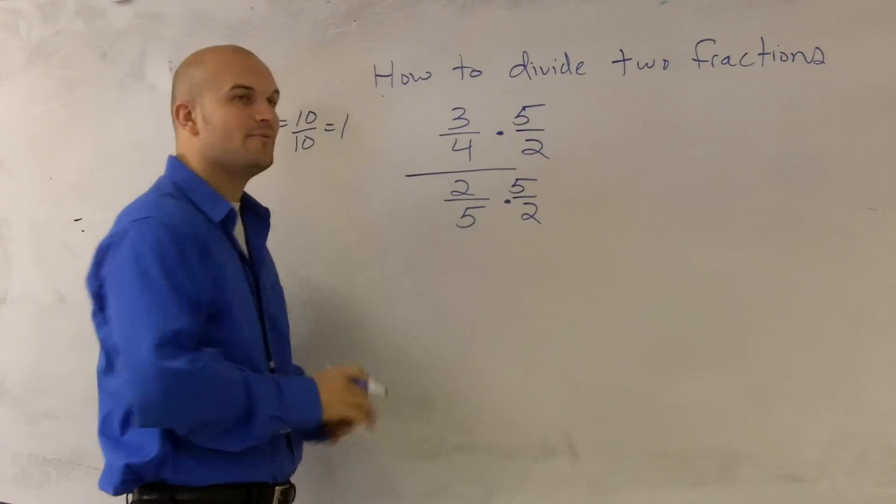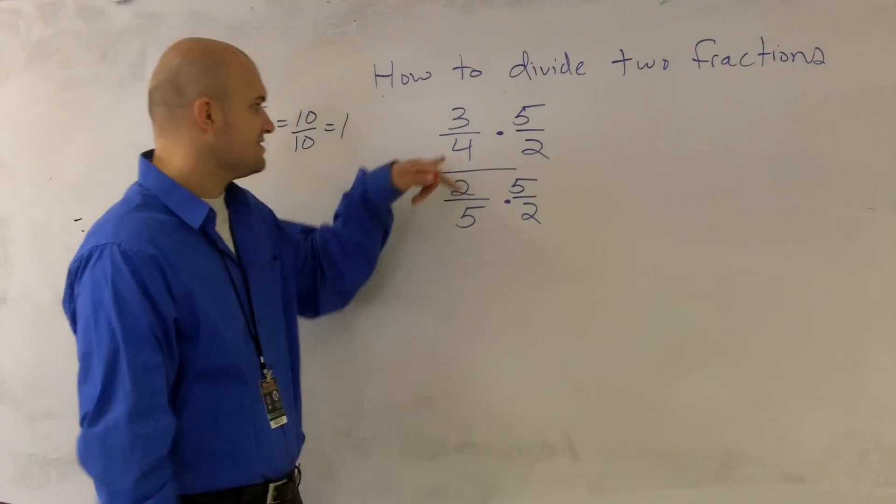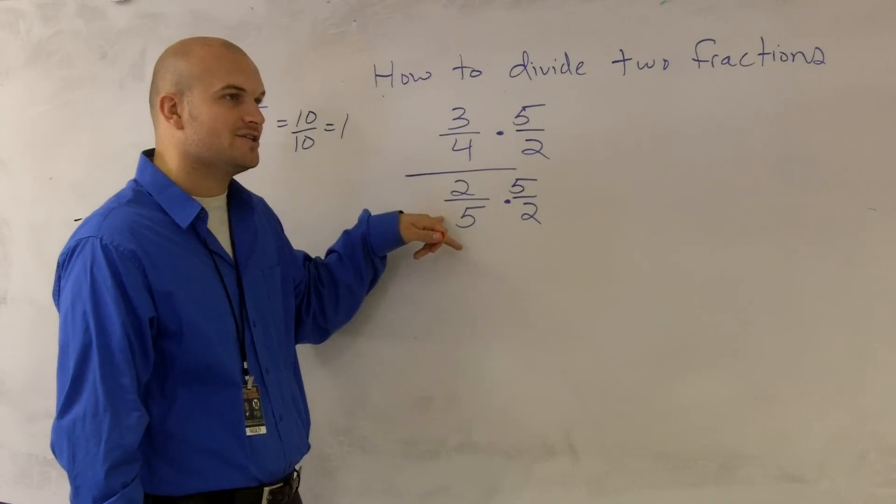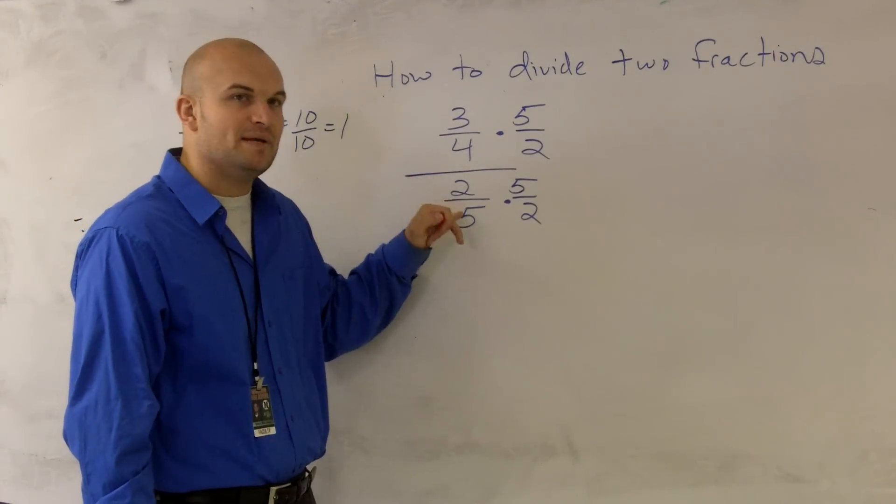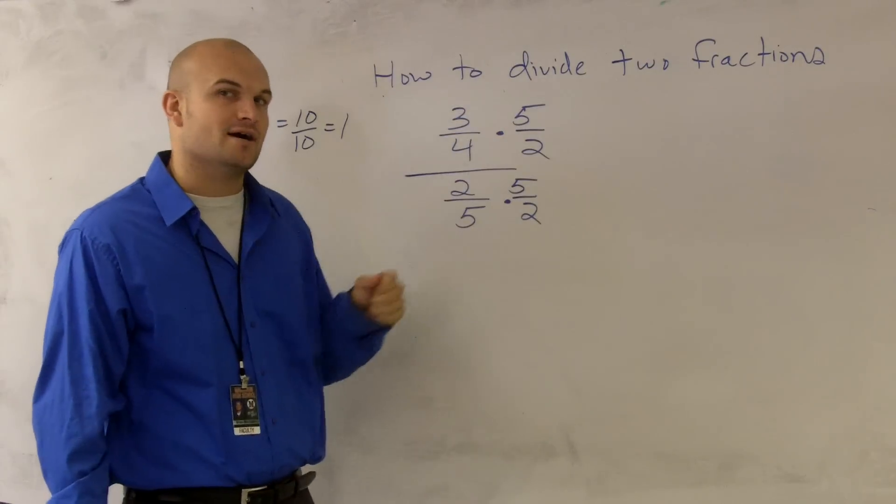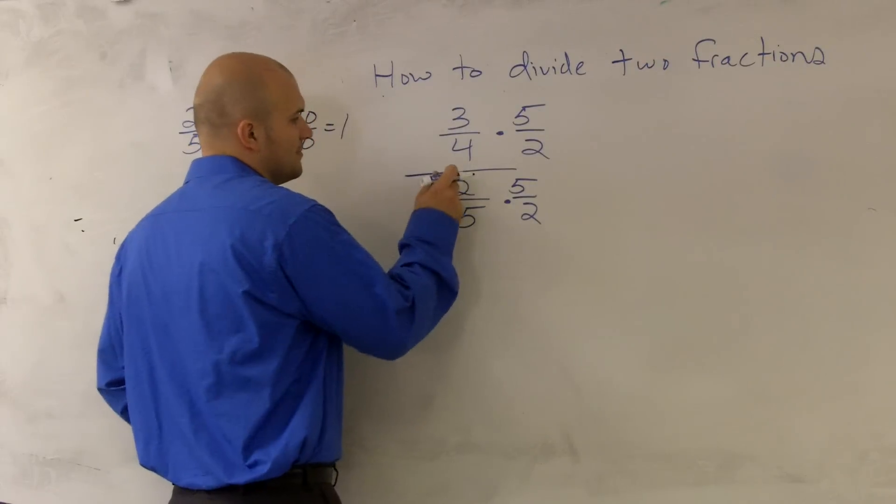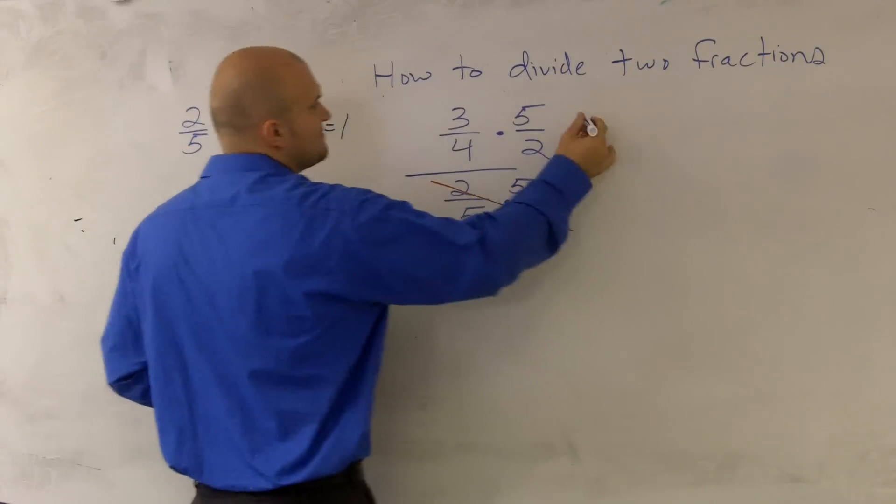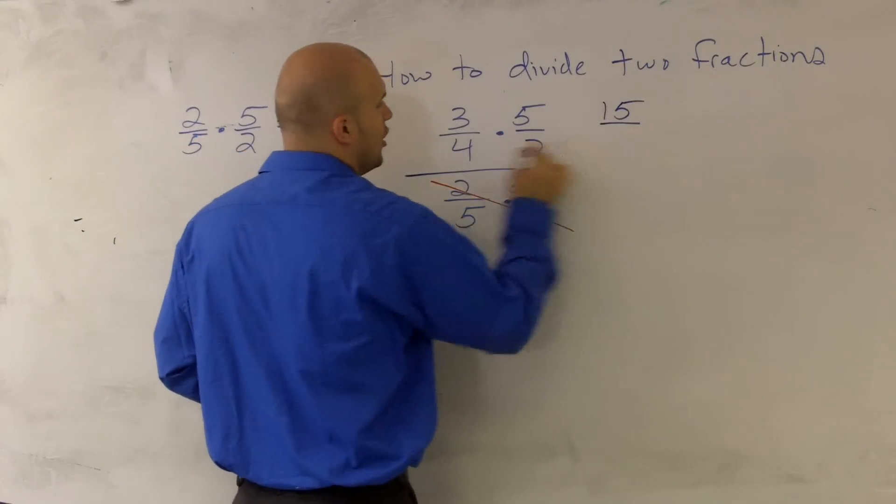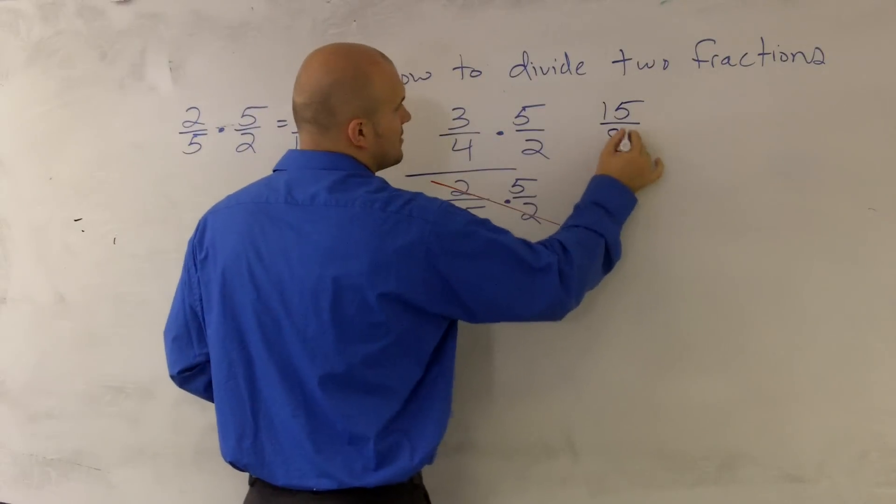And notice, what I'm truly really doing is if I have a fraction divided by another fraction, all I'm doing is I'm flipping that second fraction and then multiplying across. Because these two fractions are actually going to cancel out. 3 times 5 is 15 over 4 times 2 is 8.